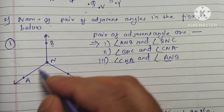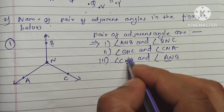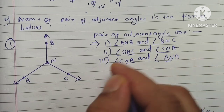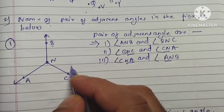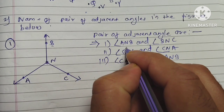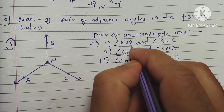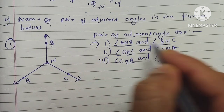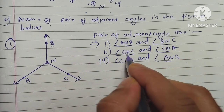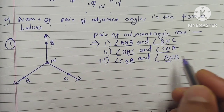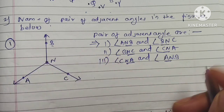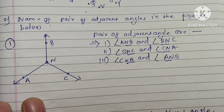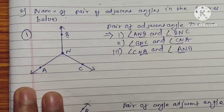For the second pair, AN is the common arm, CN is another arm, and NB is there too. The common arm and vertex N are shared, and the three pairs have separate interiors. Let's go to the next diagram.